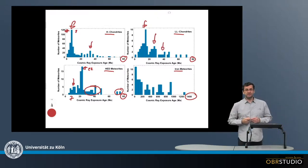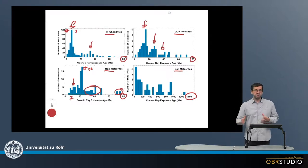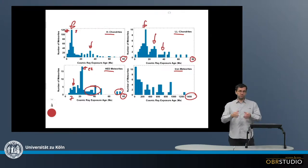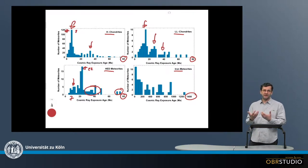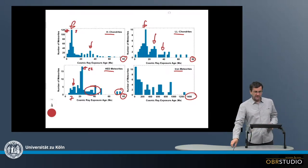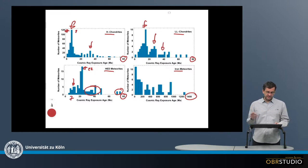And this might then, again, indicate that there were major impacts on one individual parent body that produced a lot of meteorites. They then, together, came to Earth and traveled at the same time, came together to Earth, which would mean all these chondrites here come from one parent body.